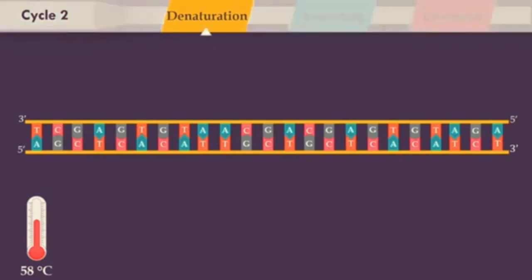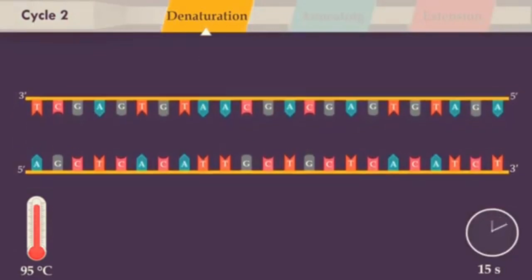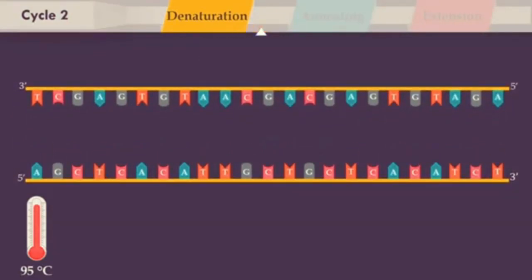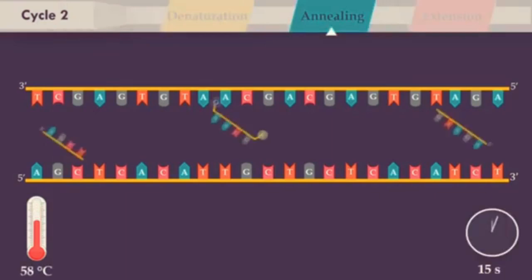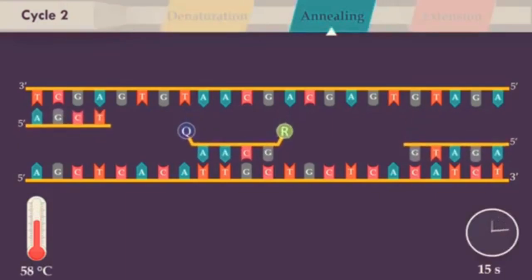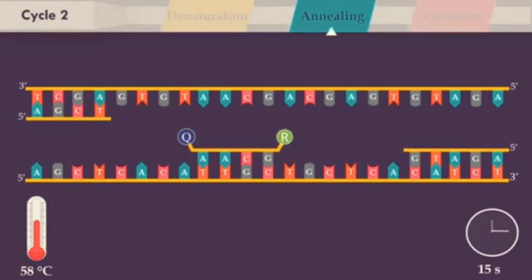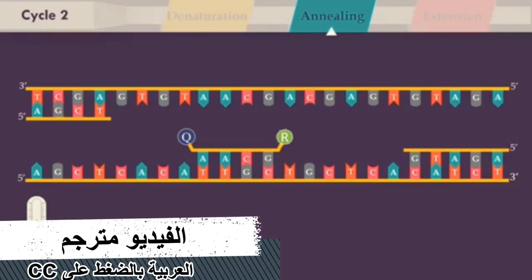Then, the denaturation of this double-stranded DNA is performed, yielding two single-stranded DNA molecules. In the next step, the reaction temperature is lowered, allowing annealing of the primers to each of the single-stranded DNA templates, and annealing of the Taqman probe to its complementary part of the target DNA.